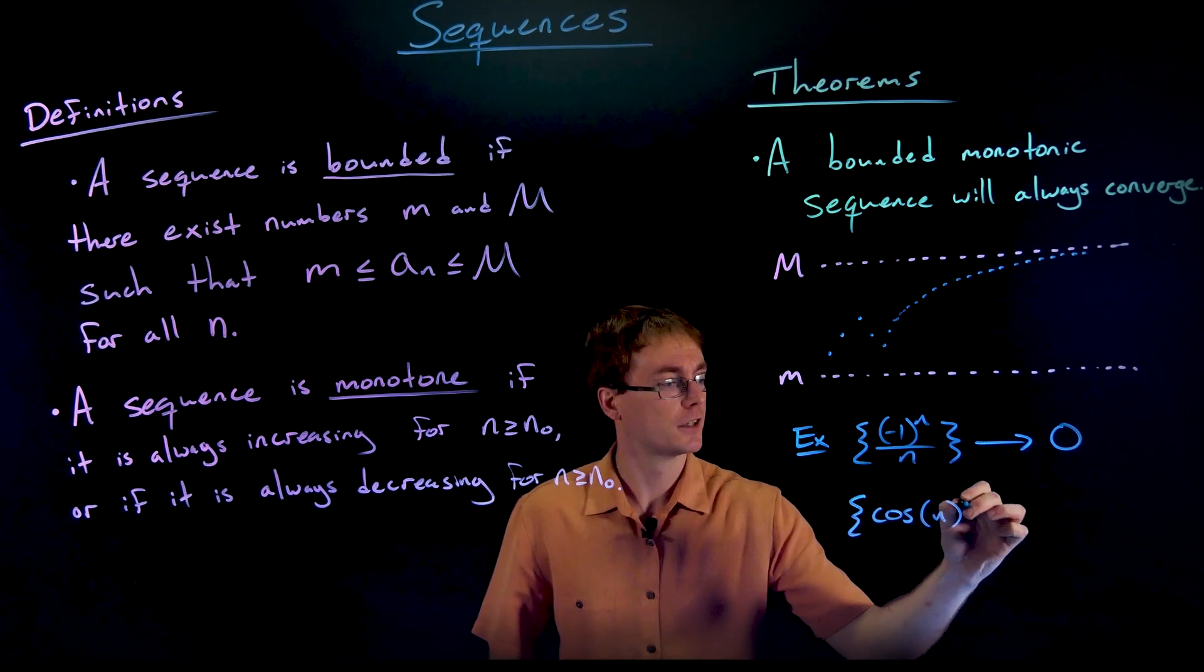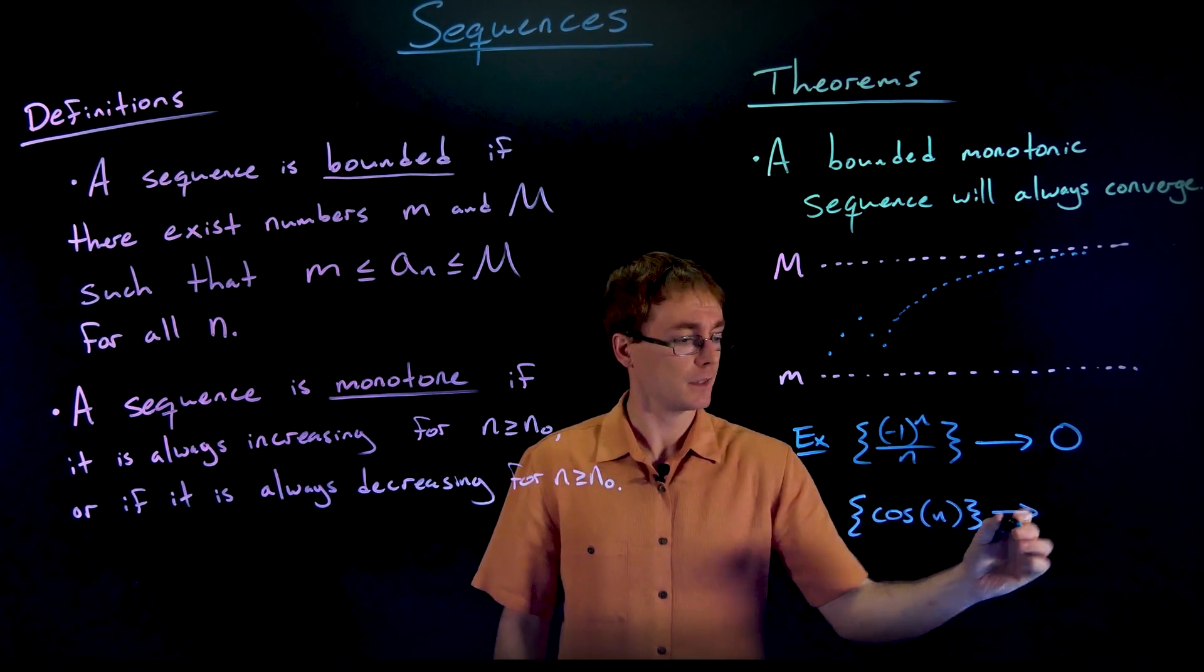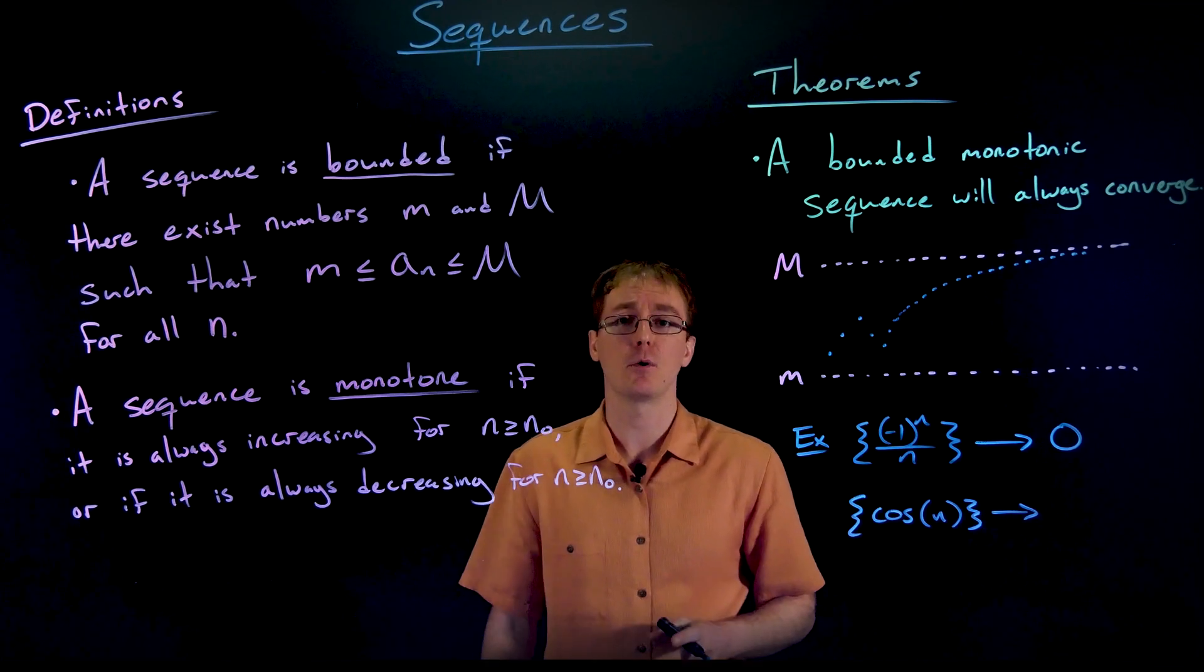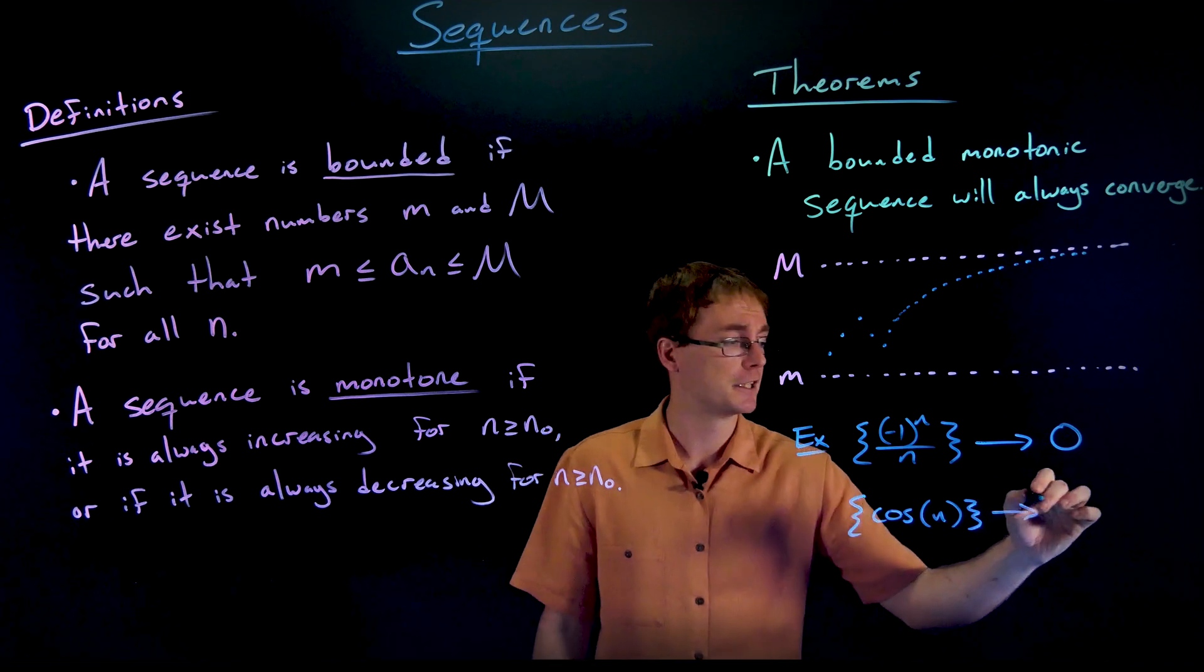We saw one of those earlier. Our sequence cosine of n is definitely a bounded sequence, right? Those values are always between negative one and positive one, but it is not monotonic and it's not going to converge either.